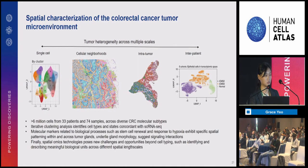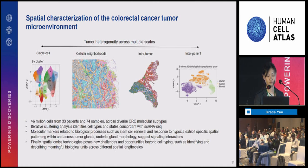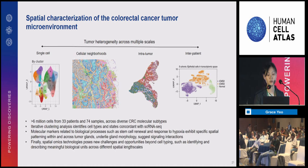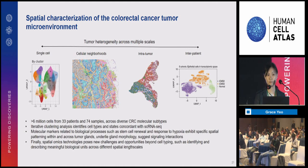In summary, we looked at over 6 million cells from 33 patients and 74 samples across diverse CRC molecular subtypes. We carried out an iterative clustering analysis with a spatial flavor identifying cell types and states concordant with scRNA-seq. We mapped cell types back into physical space and found that cells become sadly disorganized in cancer, but their spatial organization is non-random. Molecular markers related to biological processes such as stem cell renewal and hypoxia response still exhibit specific spatial patterning within and across tumor glands. Spatial omics poses new challenges and opportunities beyond cell typing, including describing meaningful biological units across different spatial length scales.